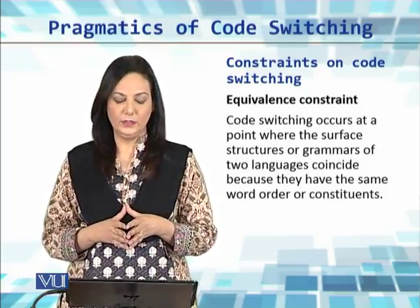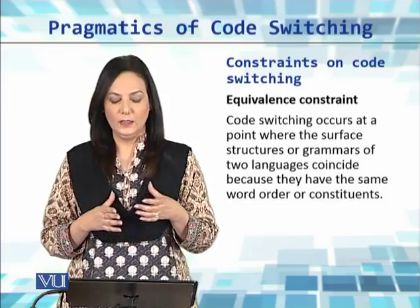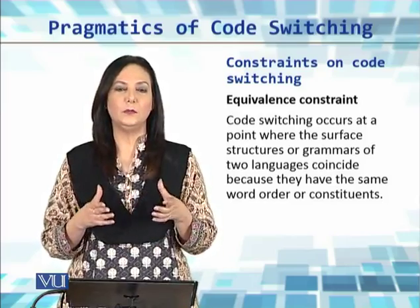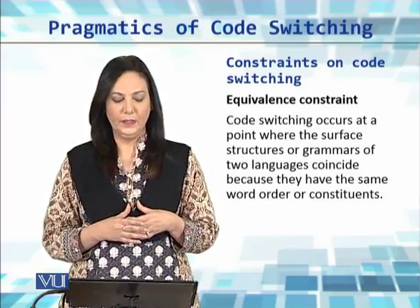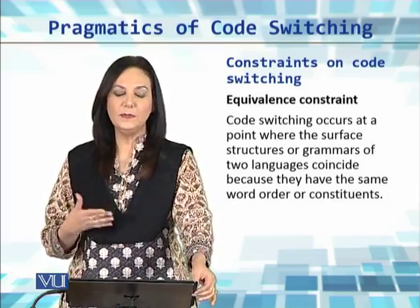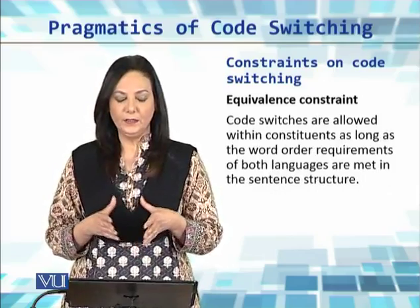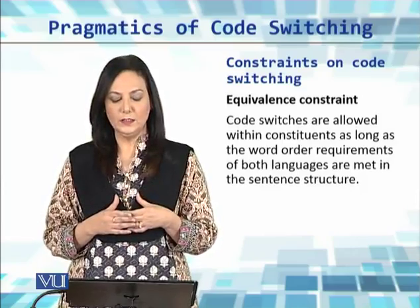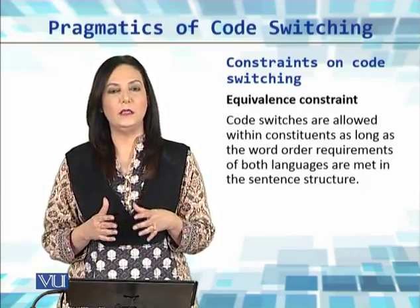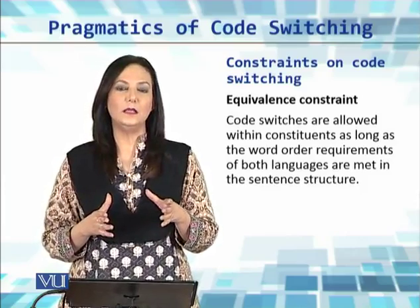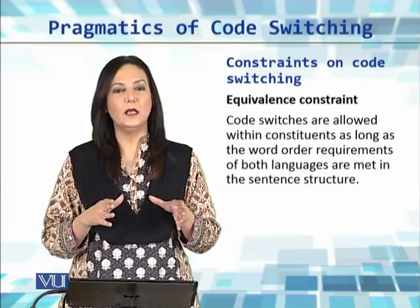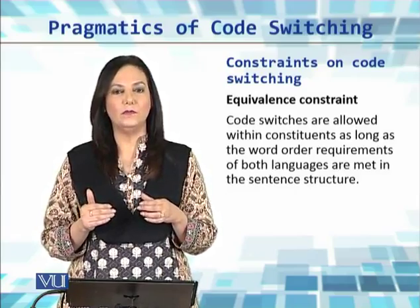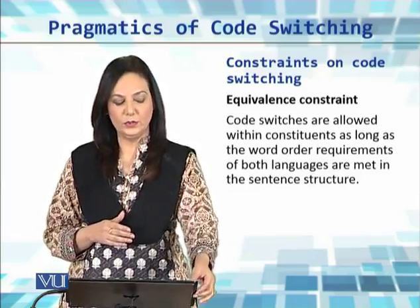The equivalence constraint says that code switching occurs at a point where the surface structure or grammars of two languages coincide, and that is possible only when the two languages have the same word order in their grammar. We can simplify this rule further by saying that code switching is allowed within constituents as long as the word order of a sentence remains undisturbed.